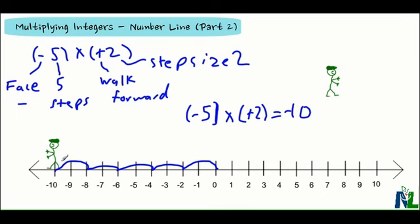Because on your paper it's going to be hard to show that you moved the man the way you did. So making these little steps here on your number line will show that you took five steps to end up at negative 10.